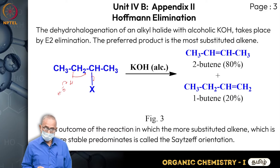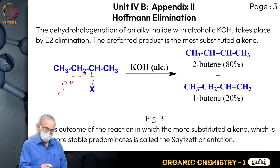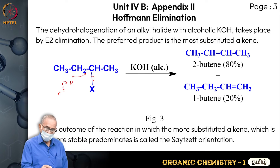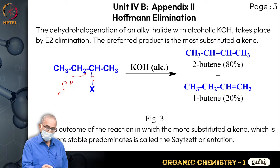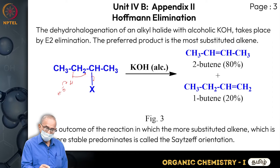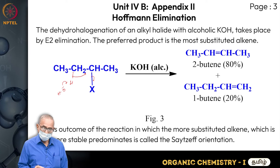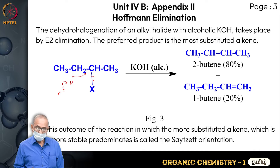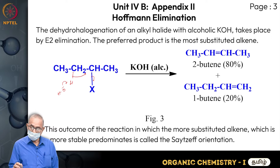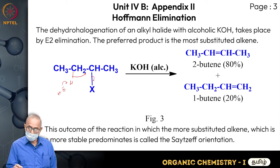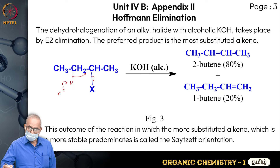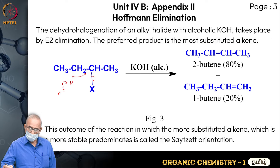This is the process by which hydroxide picks up a hydrogen as a proton, forming a molecule of water, and this bond moves between the two carbons while X leaves as X minus. So this is CH3-CH=CH-CH3, this is 2-butene formed at 80 percent - this is the more stable olefin or alkene.